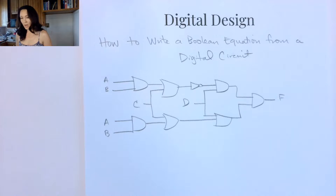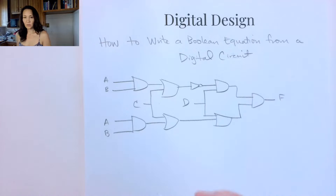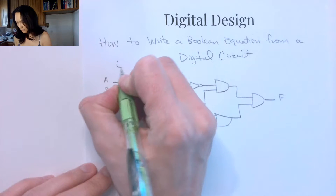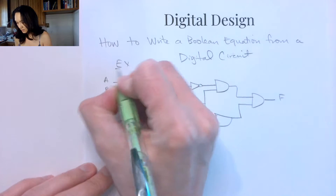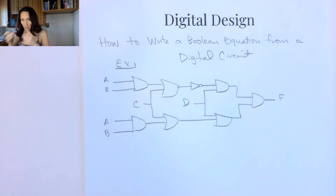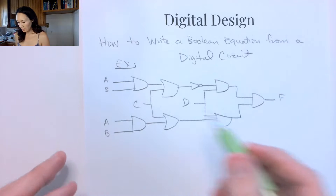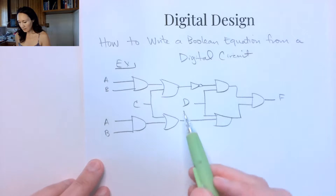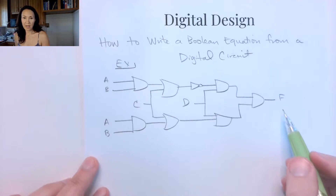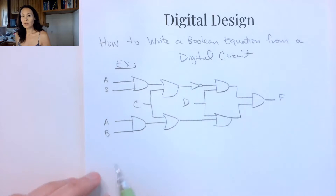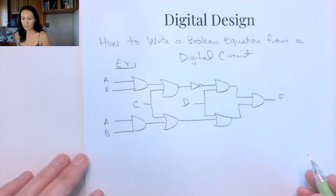Today I want to show you how to write a Boolean equation from a digital circuit. I wrote out an example of a digital logic gate array, and it has inputs A, B, C, and D, and output F. I want to show you how we would write the equation for this.